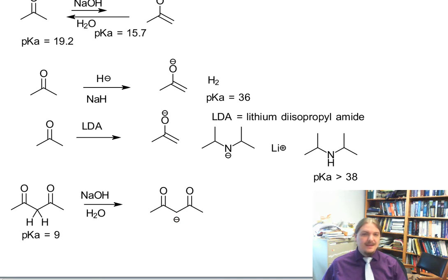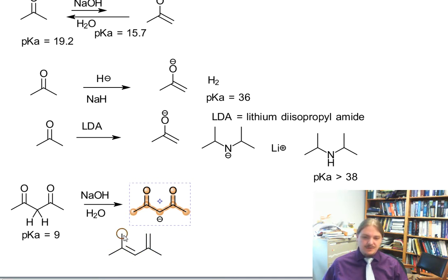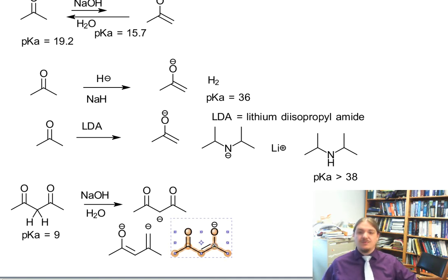And that enolate is going to happen in between the two carbonyl groups, because you get not one resonance contributor for stabilization. You get two. You get three total resonance contributors contributing to the stability of this enolate anion. So this position is much, much more acidic, and therefore you can use a weaker base to deprotonate it.